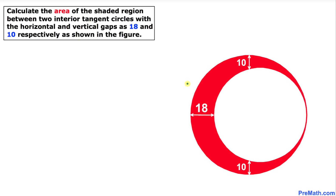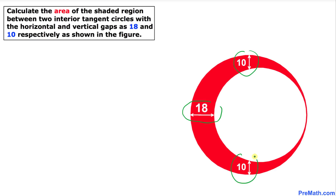Welcome to PreMath. In this video tutorial we are going to calculate the area of the shaded region between two interior tangent circles, where the horizontal gap is 18 and the vertical gap is 10 as you can see in this figure. Let's go ahead and get started with the solution.